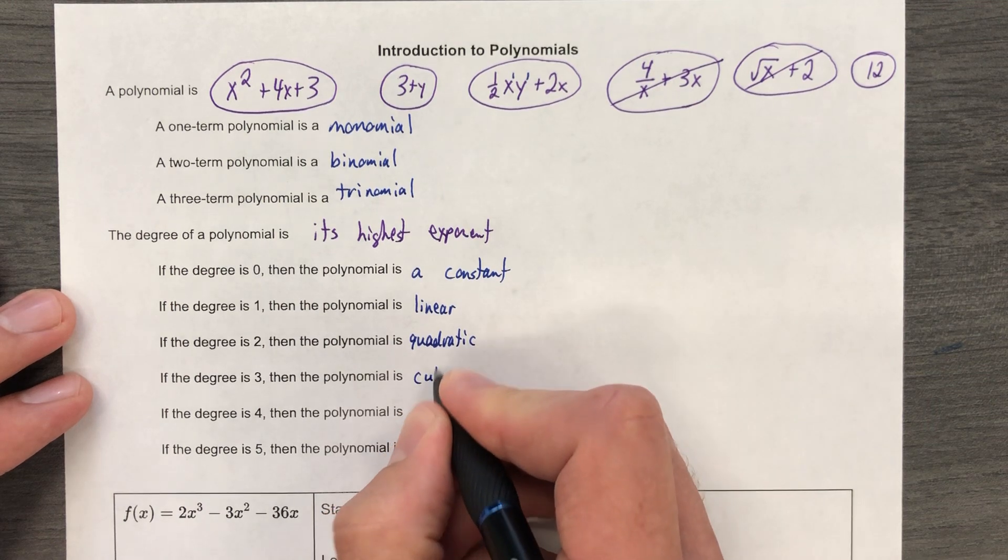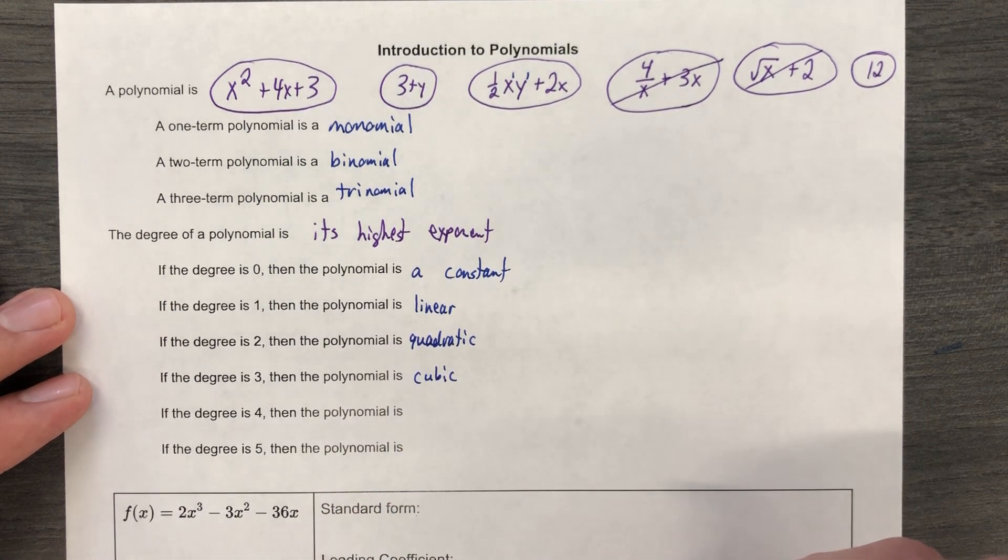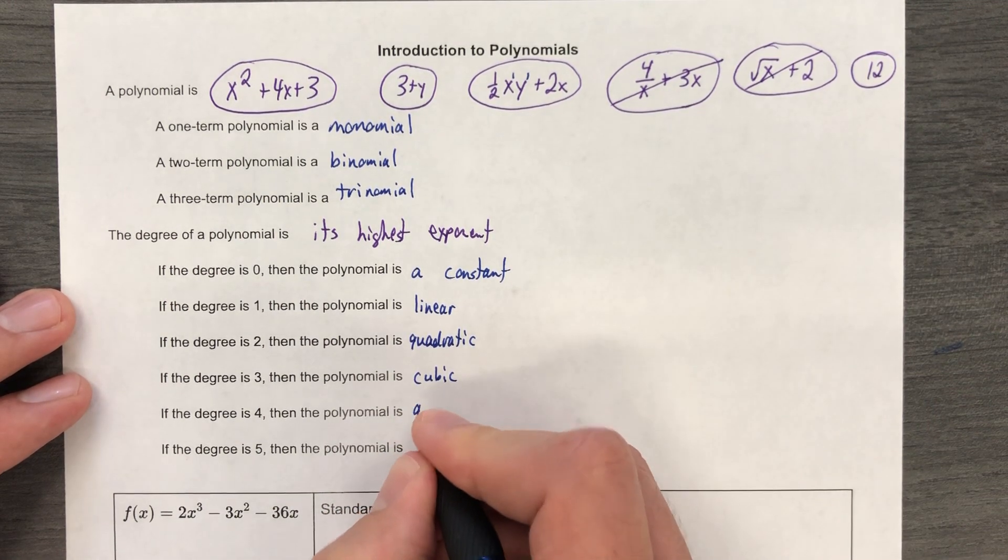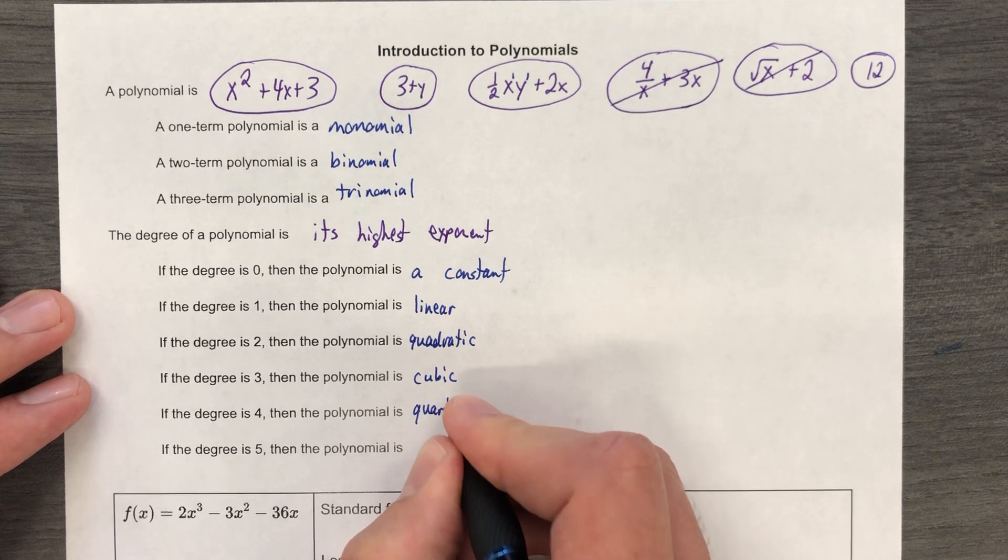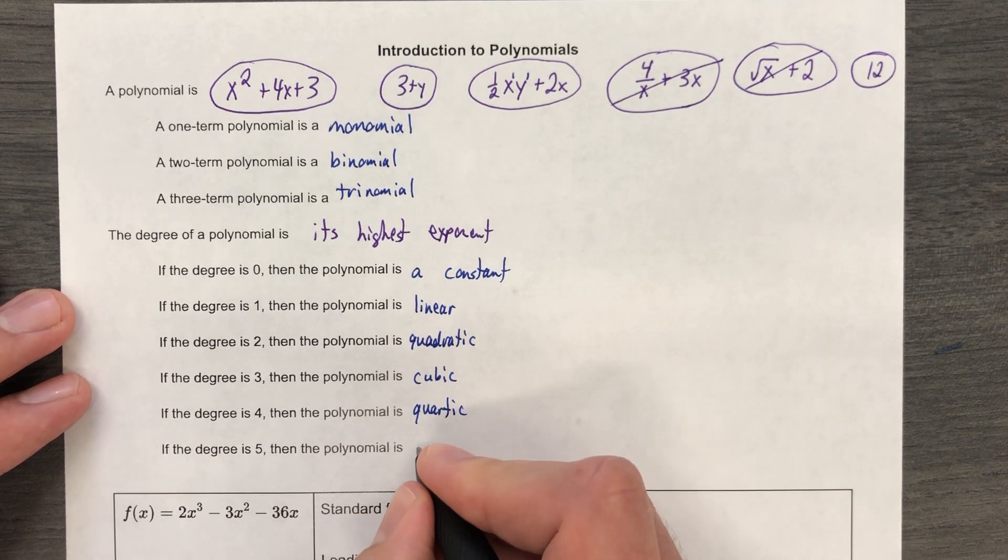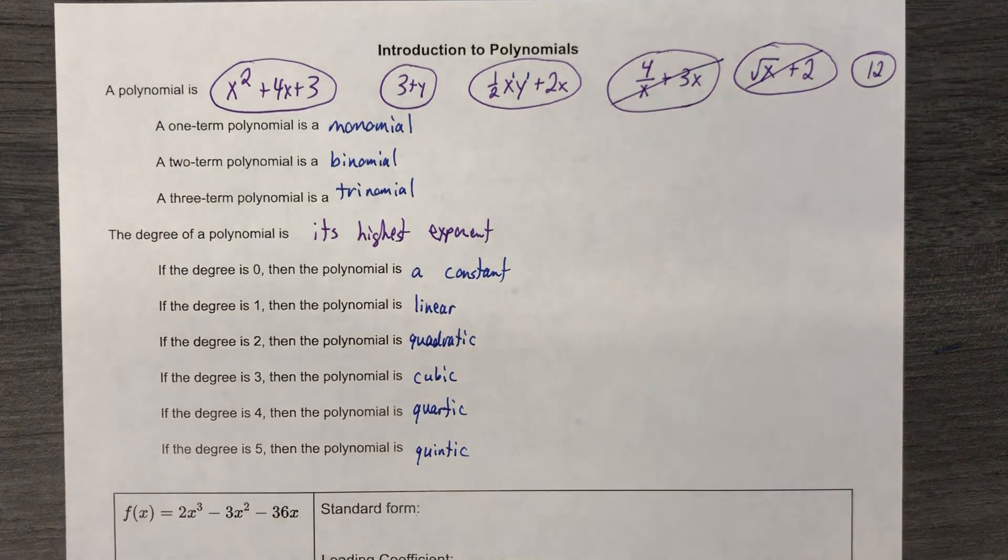If it's to the third, it is cubic. And then beyond that, we get into some words that we don't use very often, but this would be quartic. And this would be quintic, which we don't use very frequently.